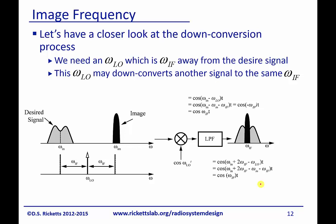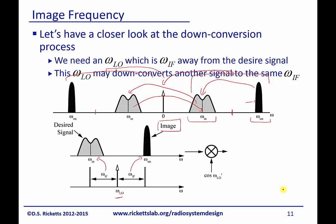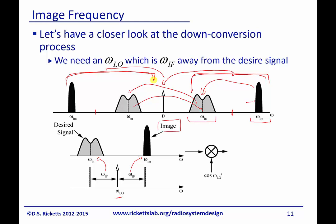Here is the mathematical description of the down-conversion process. You can see the desired signal and the image. When we down-convert, we end up with a copy of the image on top of our signal. This happens because we are down-converting both the upper and the negative frequencies, and when they overlap, the image appears on top of our signal.